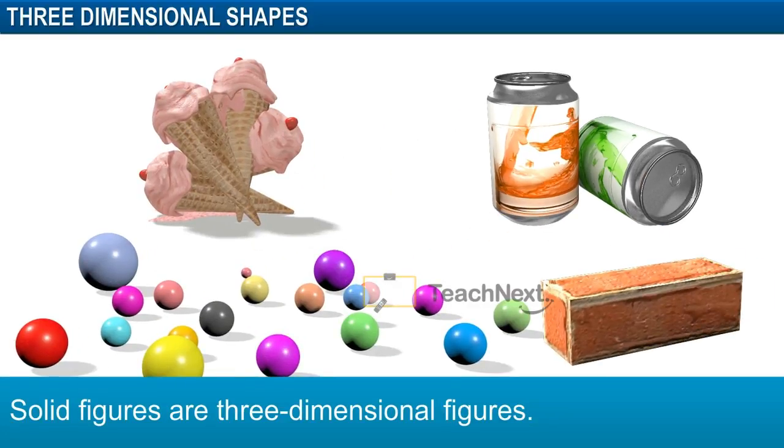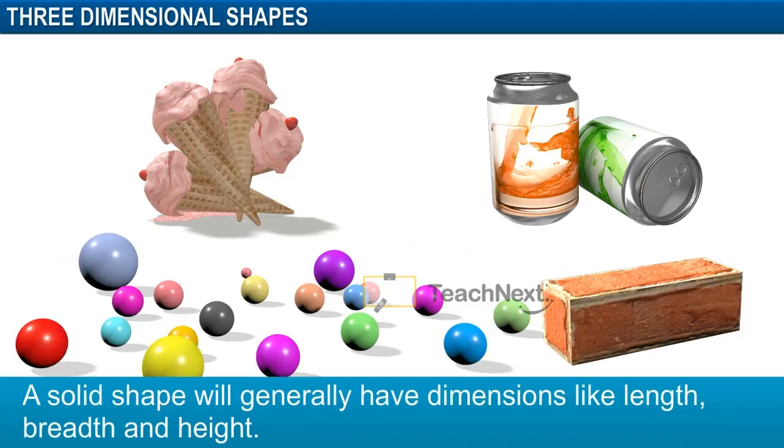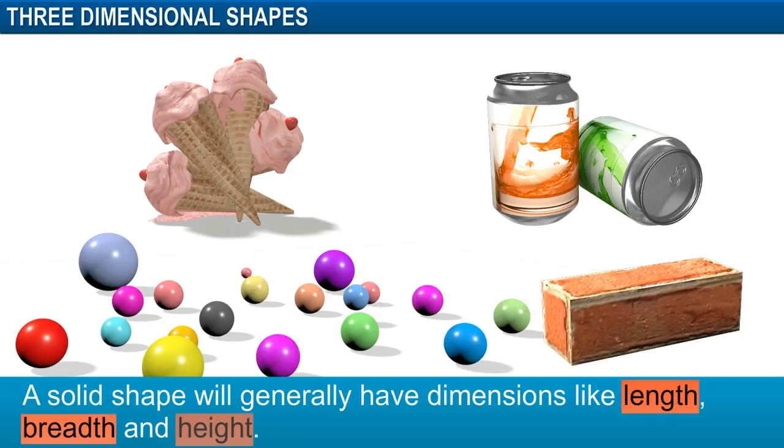All these objects have a three-dimensional shape. A solid shape will generally have dimensions like length, breadth and height.